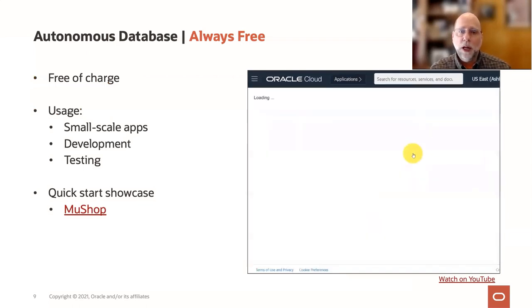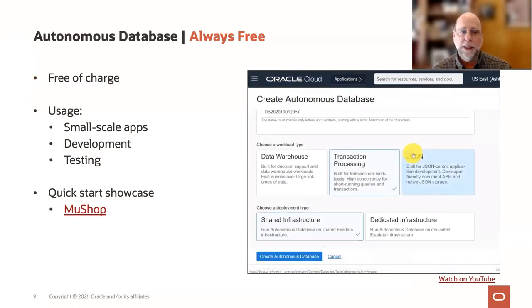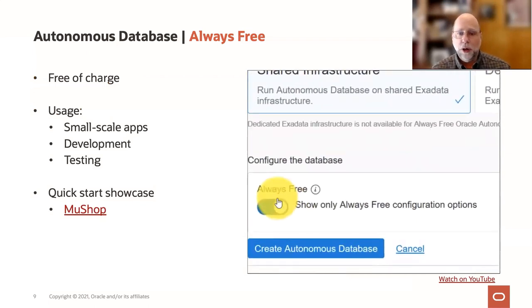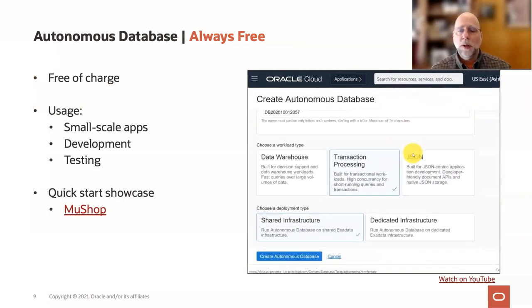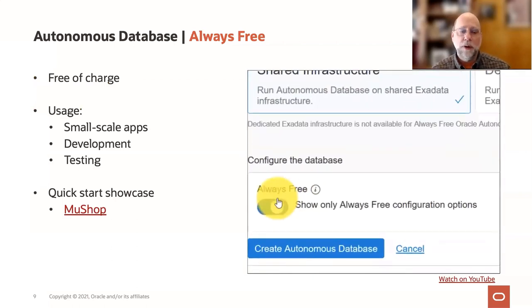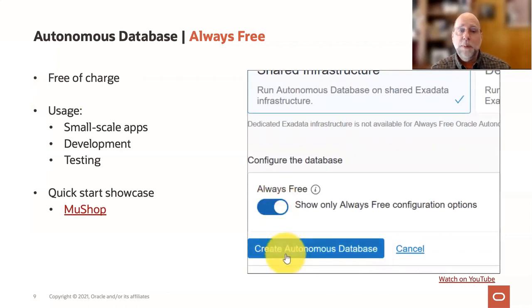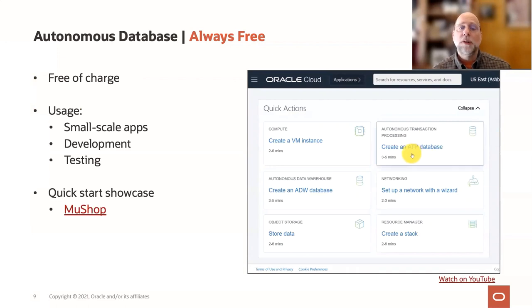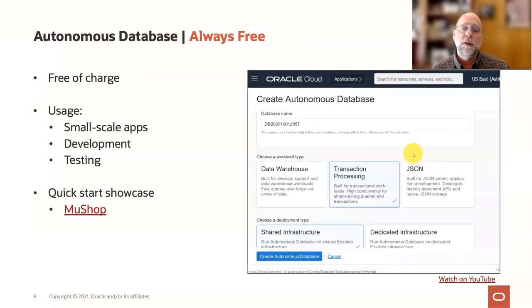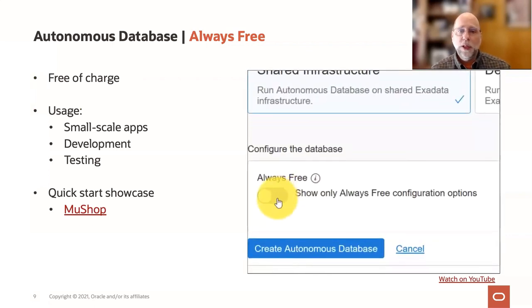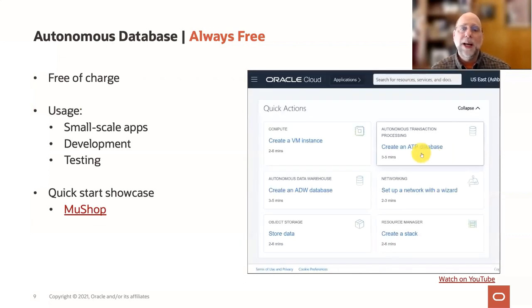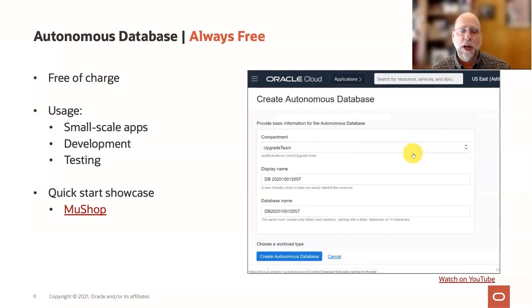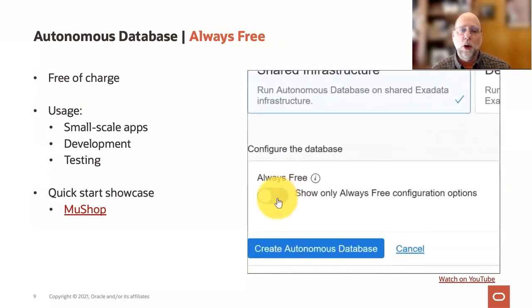Another cool aspect of Autonomous Database is the always free tier. It's free of charge for up to two databases, and there are different mixes — it can be Autonomous Database, NoSQL databases, and so on. We are limited in disk space and processor shapes, but it's a really nice way to dip your feet into the Autonomous Database world and understand it without incurring any cost or worrying about a free trial expiring. So I really encourage you to take a look at that always free tier.